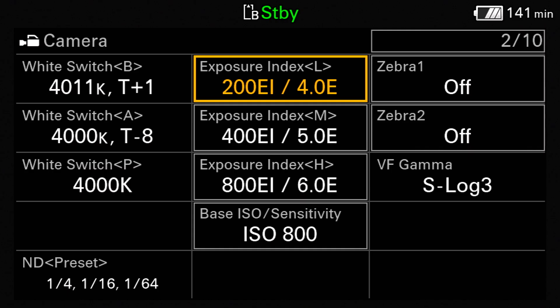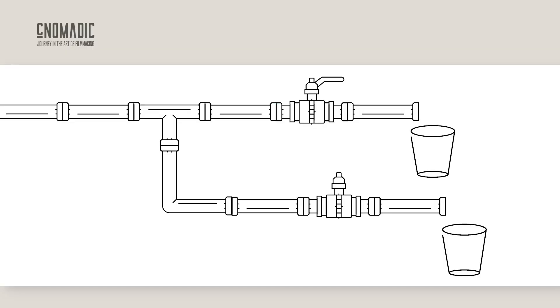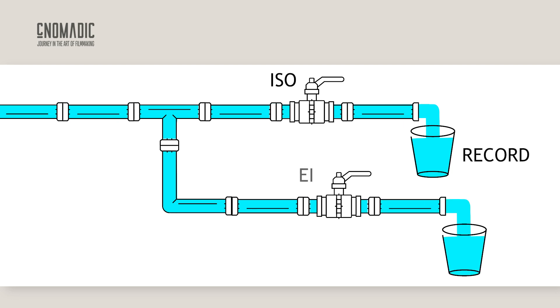So what about exposure index or EI — what exactly is it and how is it different from ISO? The way most of us were taught is that EI doesn't actually affect the recorded image; instead it simply changes how the image appears on your monitor or viewfinder. Think of ISO and EI like a water system with two valves. One valve controls the main water supply to your house, similar to how ISO controls the amplification of the signal that gets recorded. The other valve controls water going to your sprinkler system, much like how EI adjusts the signal that is sent to your monitor. Adjusting the EI changes how the image looks on the monitor without affecting what's actually being recorded, just like adjusting the sprinkler valve changes the water flow to the sprinkler without changing the main supply to the house.